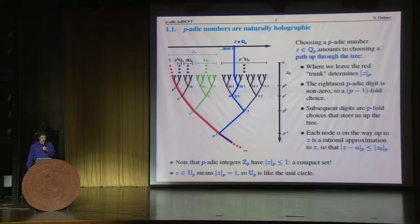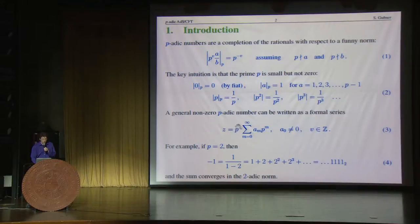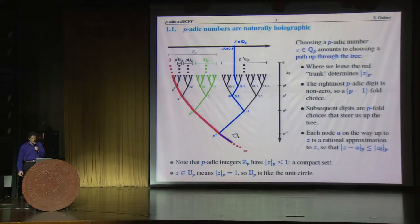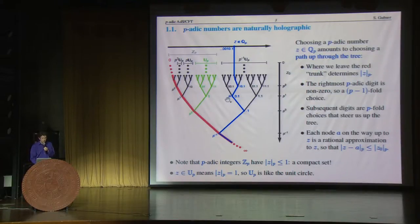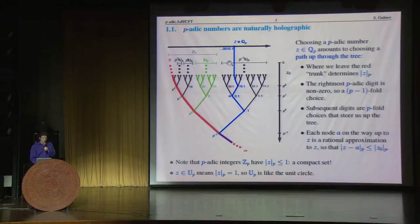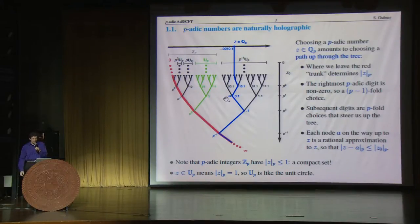The information in that expansion is encoded in the path in the following way. Where you leave the main trunk determines the overall p-adic norm — the overall p-adic norm is determined by this overall factor, so that first factor is controlled by where you leave the dark red trunk. And then every subsequent choice you make in steering your way up the tree corresponds to choosing the next p-adic digit from right to left. We should think of each node on the tree as a rational approximation to the eventual p-adic number that we find.